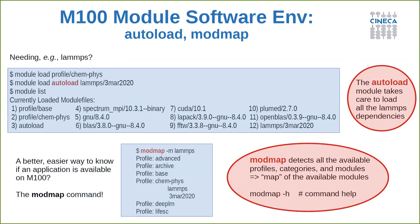There is a better way to know if an application is available on M-Cento instead of loading all domain profiles one by one. The 'modmap' command detects all available profiles, categories, and modules present on the machine. For example, typing 'modmap -m lamps' will output that LAMMPS version 3 March 2020 is contained in the CAMPFIS profile.